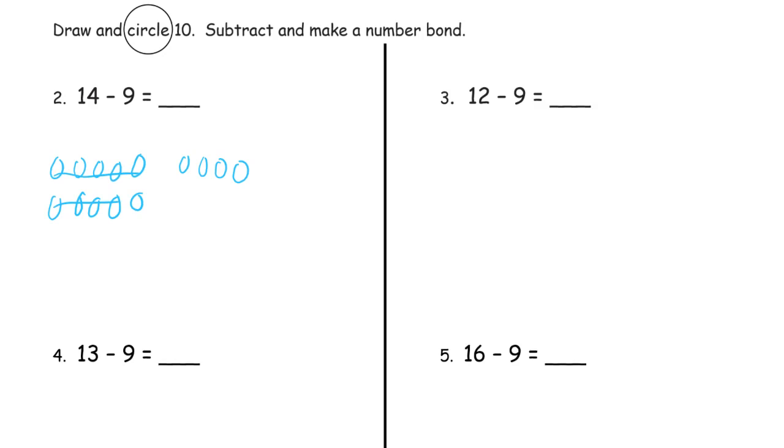Cross out 9. Oh, there's one left. This 4, and one more, 5. Make a number bond. A whole of 14. Parts of 9 and 9 crossed out and 5 left.